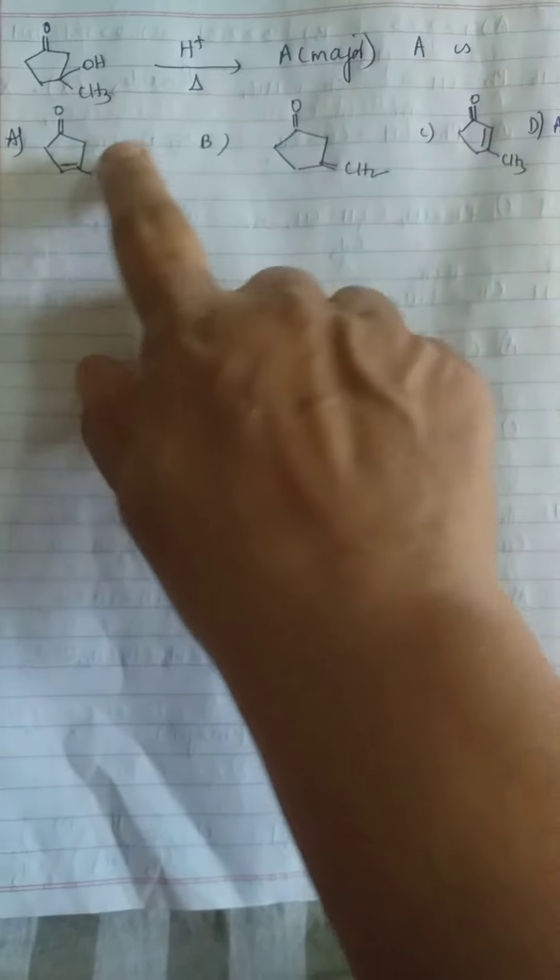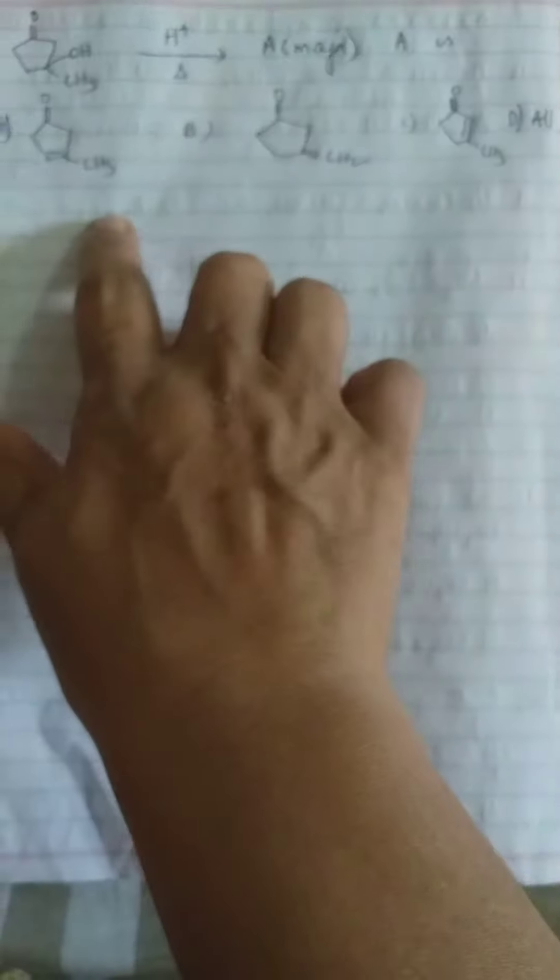Use common sense - there will be several products, but we want to know only about the major product. So the last option is ruled out. It cannot be all. Now, the first thing we know is OH will go out. When OH goes out, it will form a carbocation here.